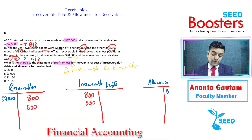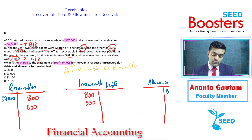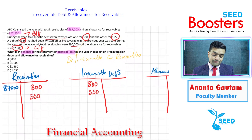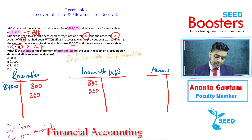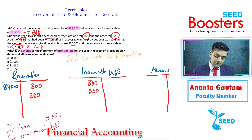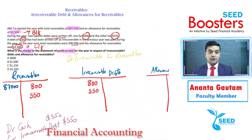Next, a debt of 350 that had been written off as irrecoverable in the previous year was paid during the year. When a previously written-off debt is recovered, the double entry is: debit cash, credit irrecoverable debts. So 350 goes on the credit side of the irrecoverable debts account.